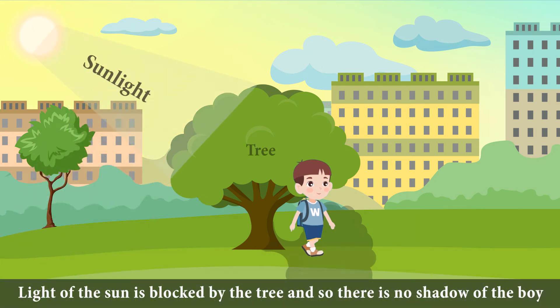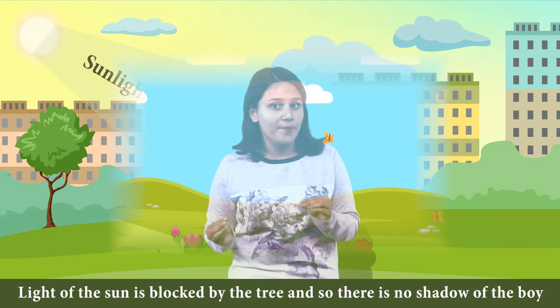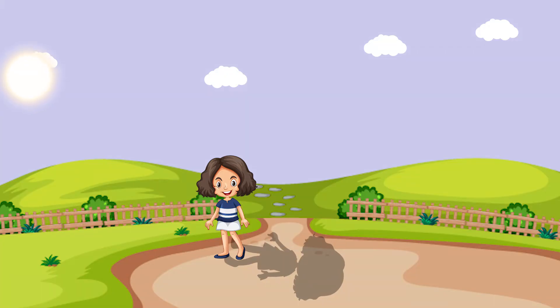And so there is no shadow of the boy. Not only humans — everything that lies in light has its shadow. If you don't believe it, look at the tree! Did you see it has its big shadow? Just for a surprise — shadows are longer in morning and evening, and shorter at noon.